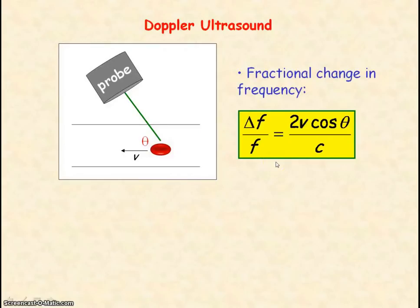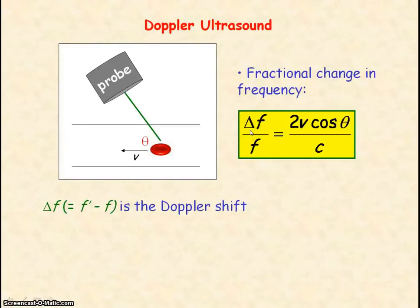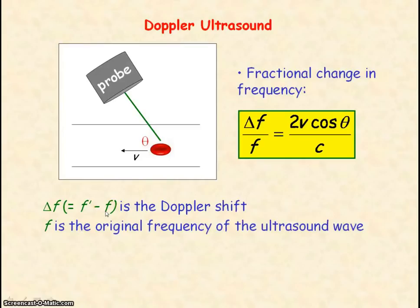This equation can be used to measure the speed of blood, where delta f divided by f represents the fractional change in frequency. Delta f is the change in frequency — the Doppler shift — equal to f prime minus f. F prime is the frequency of the ultrasound detected by the probe, and f is the original frequency emitted from the probe. The factor of two in the equation accounts for the double Doppler shift: the change in frequency for the incident wave as well as for the reflected wave.